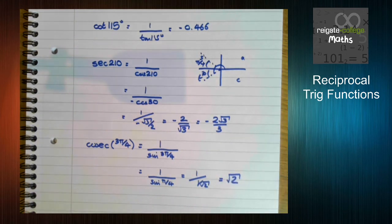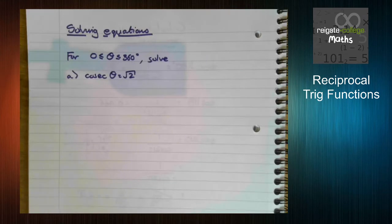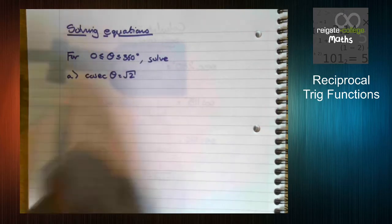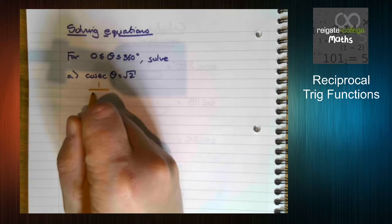And again, you can check it on your calculators. So now we're going to have a look at solving equations using these reciprocal trig functions. The main thing to remember is, it's basically the same as what you've been doing since GCSE with trig functions, just an extra step first. So we want to solve this equation, cosec θ equals root 2.